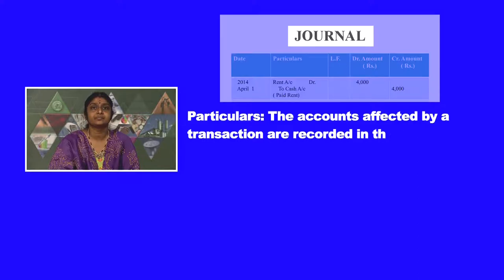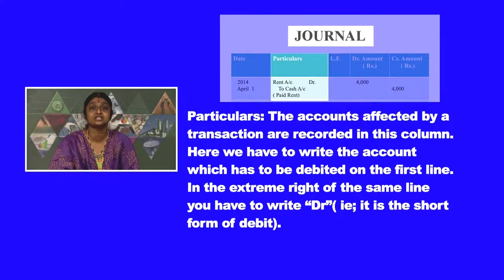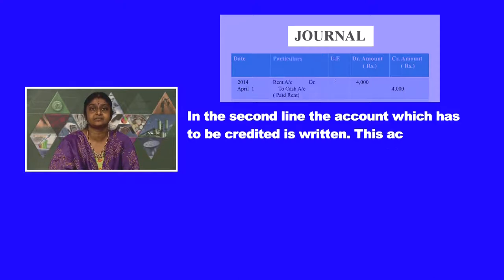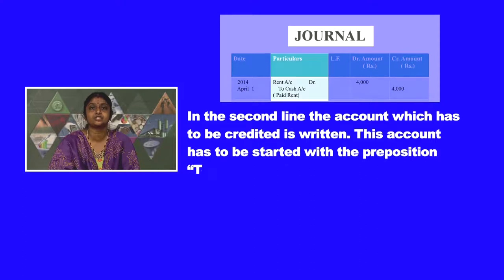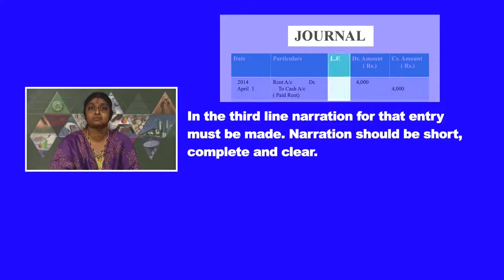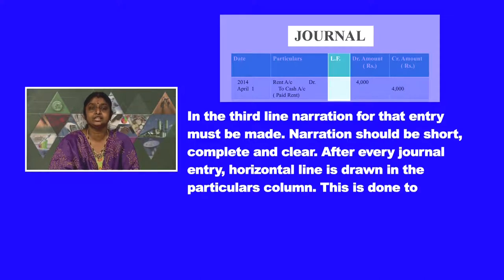In the particulars column, the accounts affected by a transaction are recorded. We have to write the account which has to be debited on the first line, and in the extreme right of the same line, write DR — that is the short form of debit. In the second line, the account which has to be credited is written, and this account has to be started with the preposition 'to'. In the third line, narration for that particular entry must be made. Narration should be short, complete, and clear. After every journal entry, a horizontal line is drawn in the particulars column to separate one entry from the other.